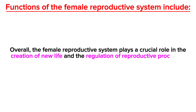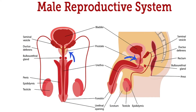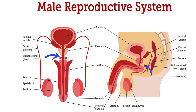Now we move to the male reproductive system. We're going to talk about the testes, epididymis, vas deferens or ductus deferens, prostate gland, urethra, penis, seminal vesicles, and bulbourethral glands also known as Cowper's glands — their parts and functions.